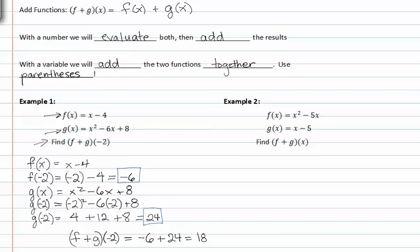In example two, again we're given two functions, and we're asked to find the sum of f and g of x. Notice that in this case we have a variable, and we'll have to add the two functions together using parentheses.